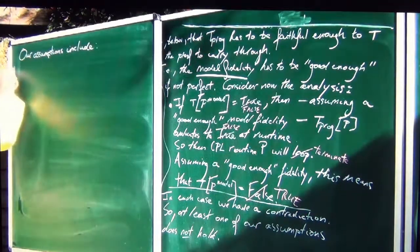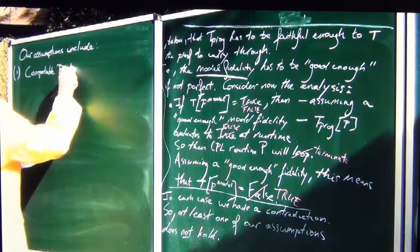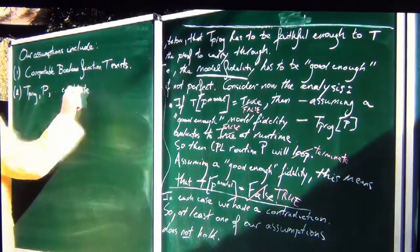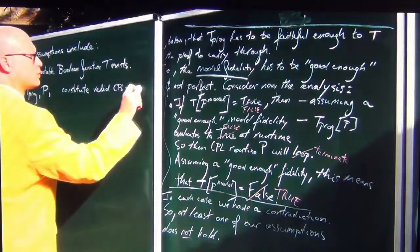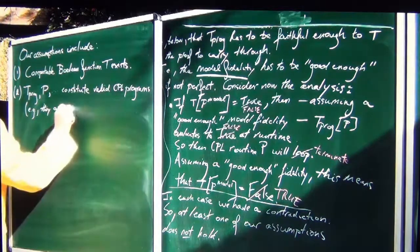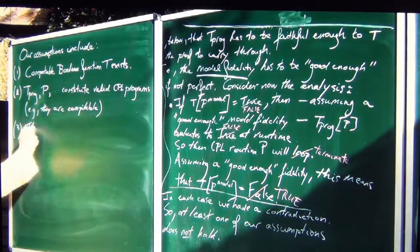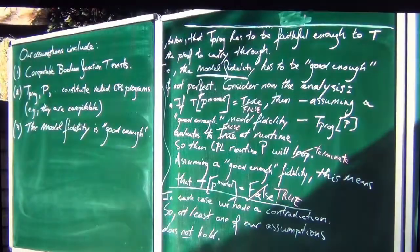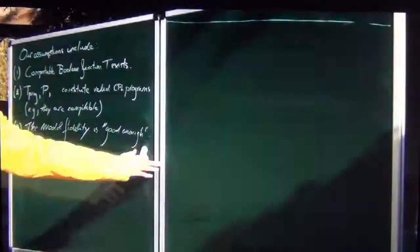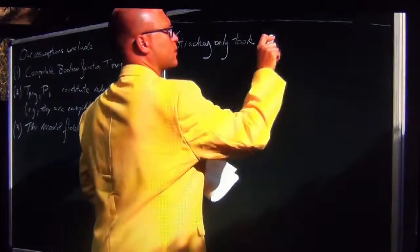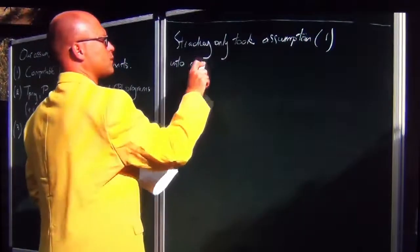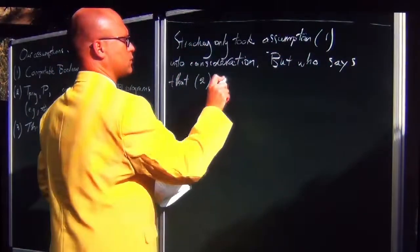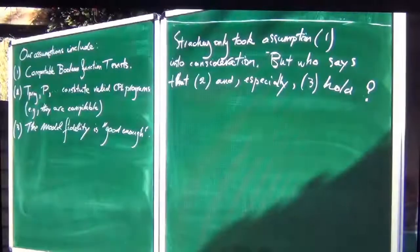Our assumptions include: number one, a computable boolean function T exists — not just boolean function T, but computable boolean function T. Number two, which Strachey did not have: T-program and P constitute valid CPL programs — for example they have to be compilable. Number three: the model fidelity is good enough. Strachey didn't have this third assumption either. Strachey only took assumption one into consideration in 1965. But who says that two, and especially three, hold?